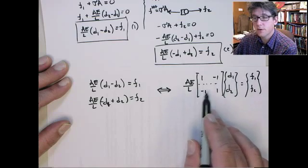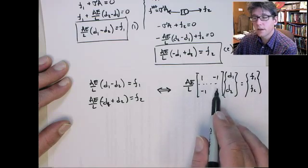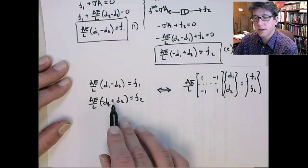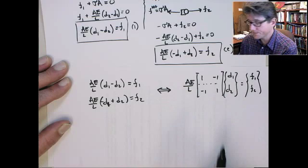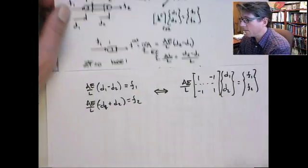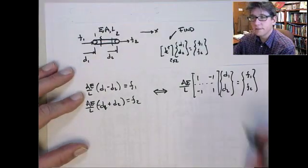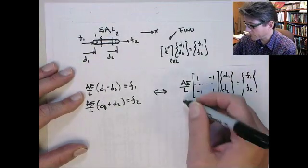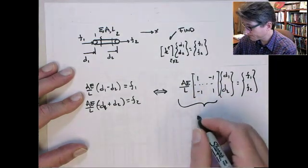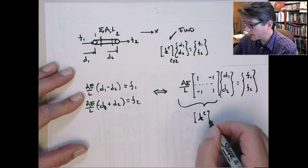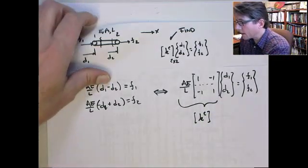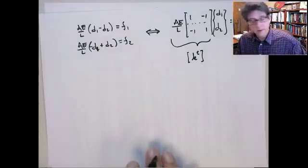And likewise, the second equation gives you minus D1 plus D2 times AE on L. That's the left-hand side here is equal to F2. So if we compare this back to what we wanted to find originally, we can see obviously that this quantity is the element stiffness matrix. So in this situation, we're done.